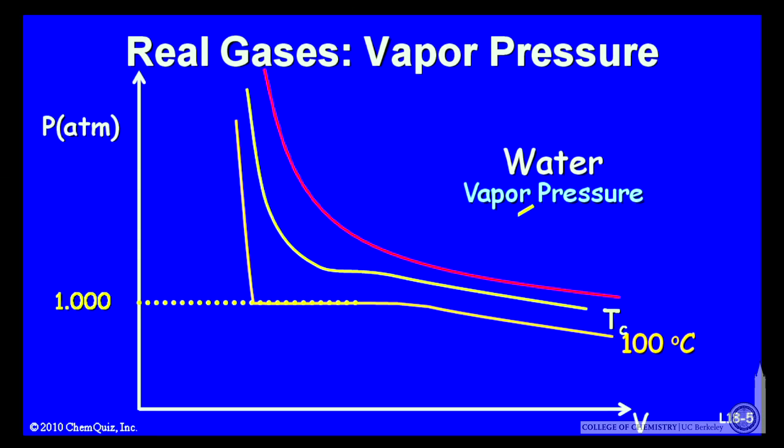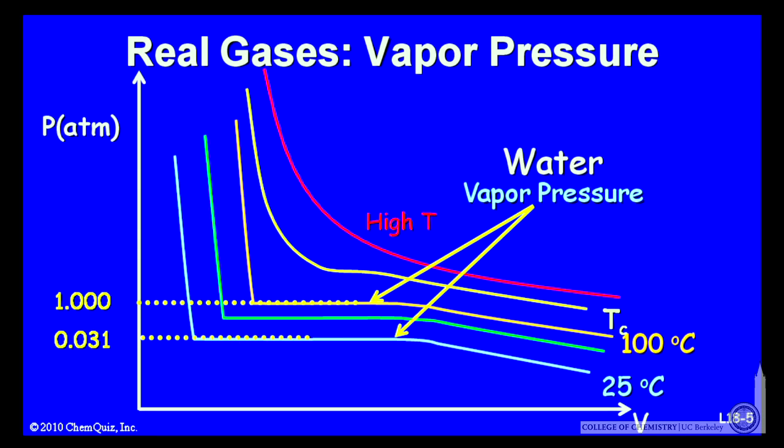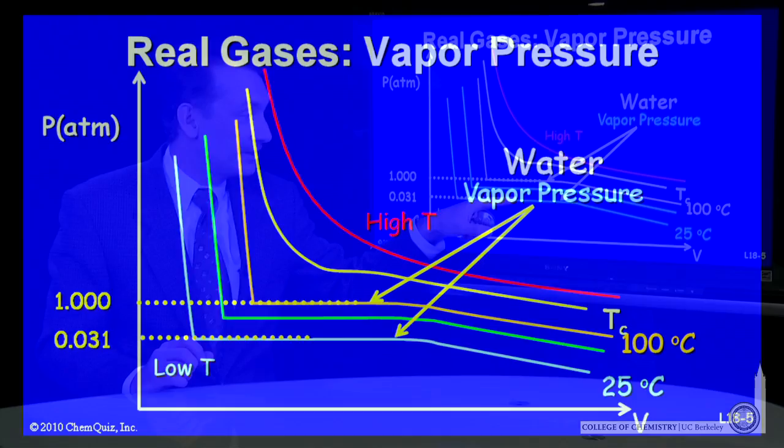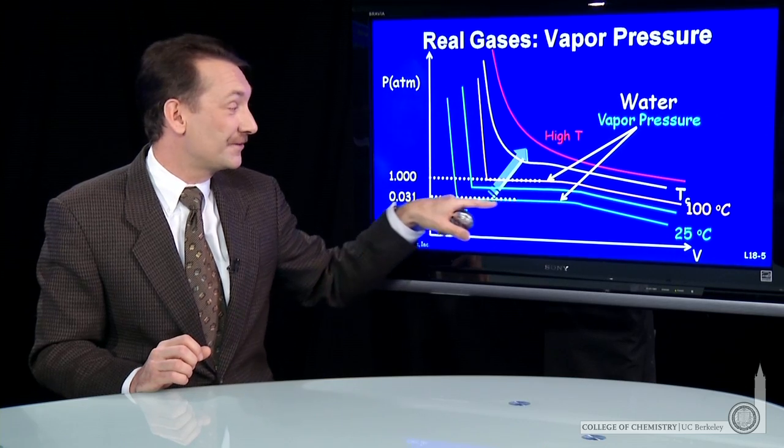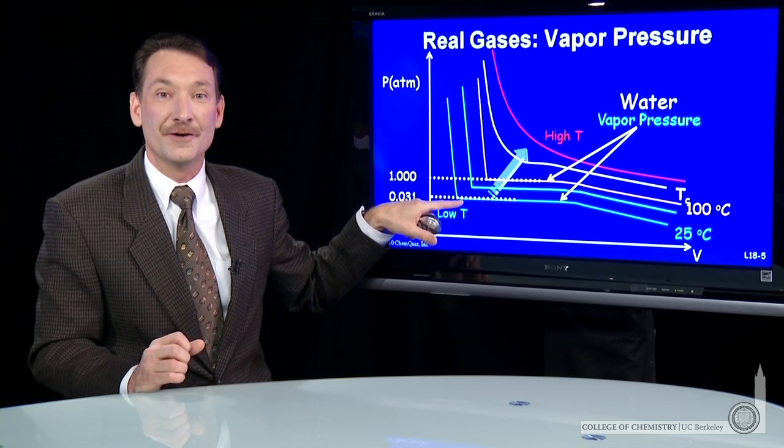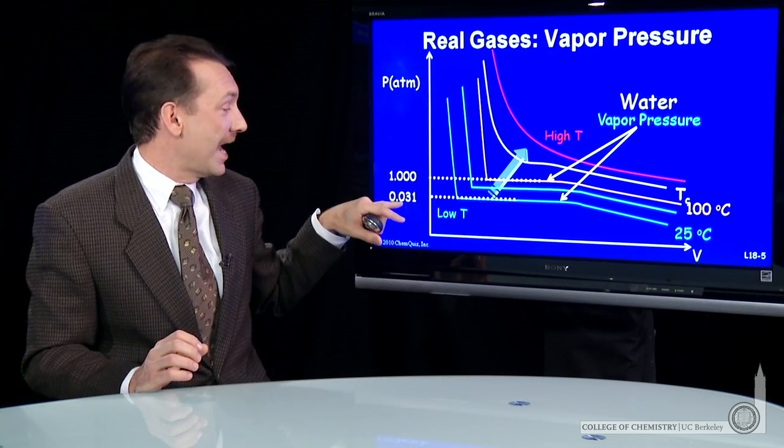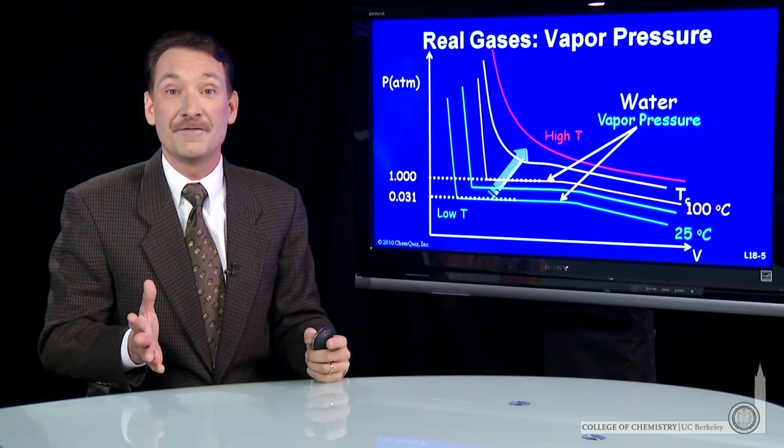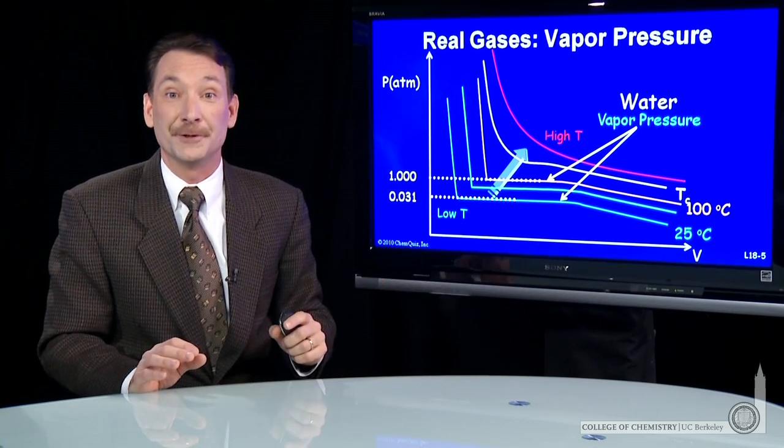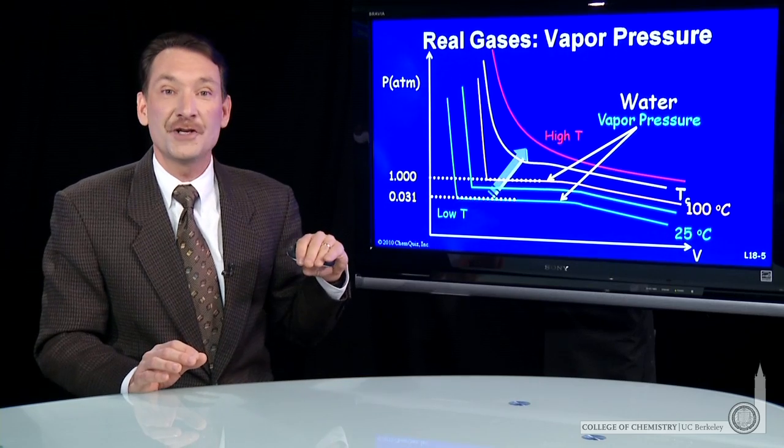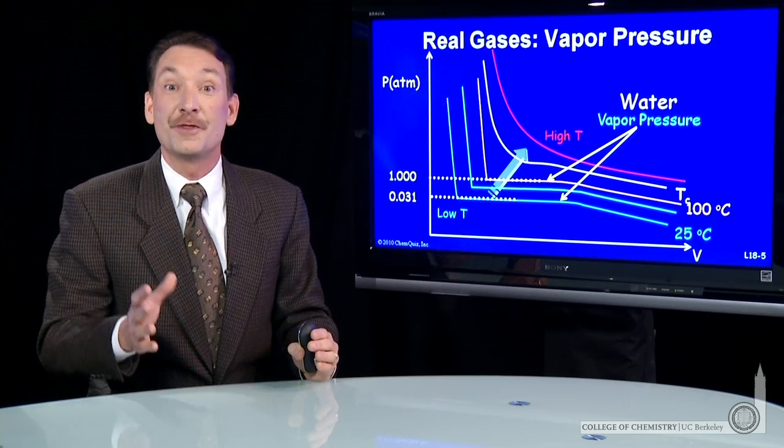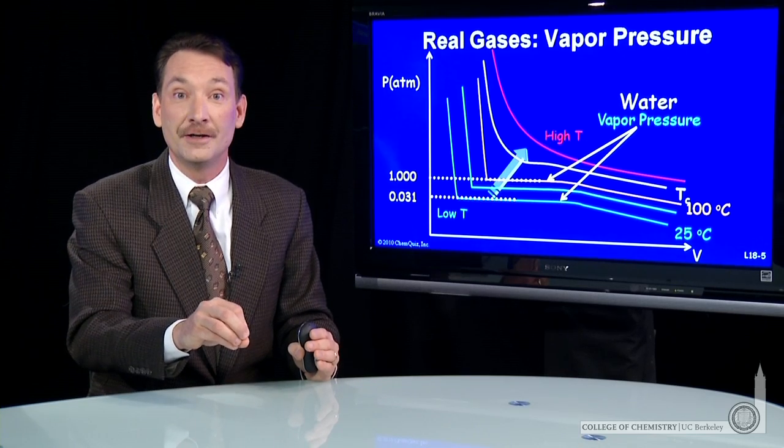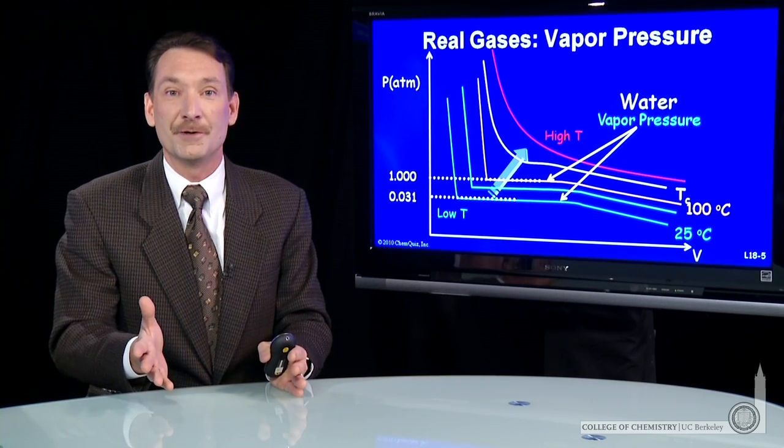Now, let's go to an even lower temperature. Let's go down to say 25 degrees C room temperature. As I go down to 25 degrees C, the gas will behave like a real gas, and I'll have this flat line in the PV curve, and that will occur at 0.31 atmosphere for 25 degrees C. That's near room temperature. So the vapor pressure of water at room temperature is 0.31 atmosphere. So that's the partial pressure of water above liquid water at room temperature.